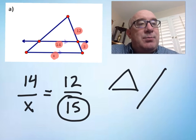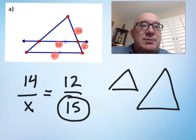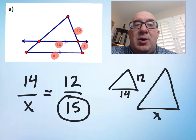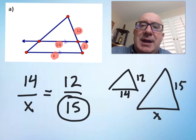One of the ways I always teach this is to pull them apart, to think of them as two separate triangles. When you do that, you get 14 over x equals 12 over 15, and it's a little easier when you do that. Good luck.